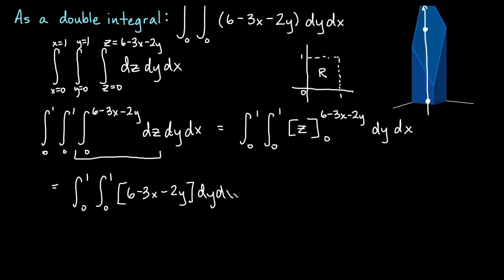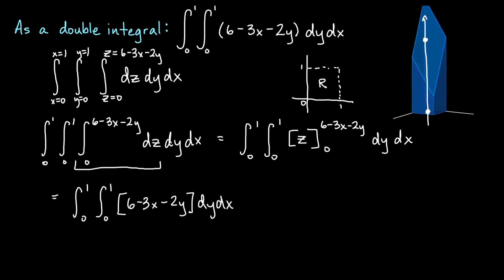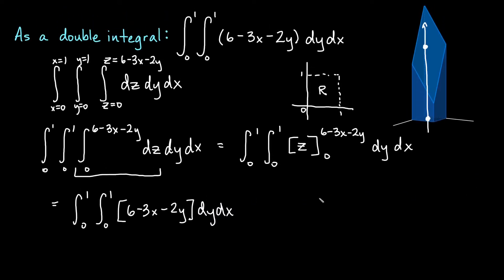What you might notice now is that we have basically the exact same integral we started with when we did this as a double integral. We have 0 to 1, 0 to 1, the same function, dy dx — exactly what we had before.